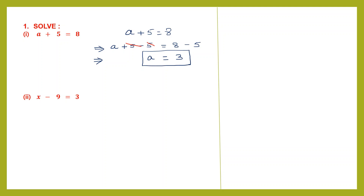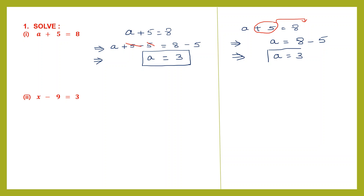Now let's do the transposition method. a + 5 = 8. According to the transposition method, when we transpose a positive sign from the left-hand side to the right, it becomes a negative sign. Since we are solving for a, we leave only a on the left. We transpose +5 to the right-hand side — it becomes −5. So a = 8 − 5 = 3. Whichever method you use, your answer will be the same.